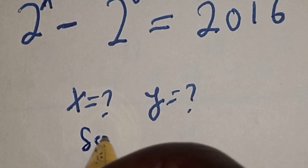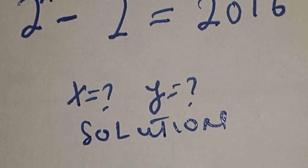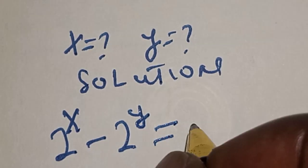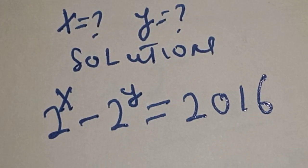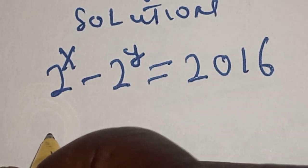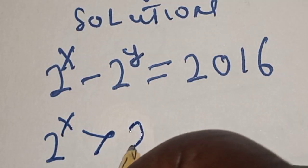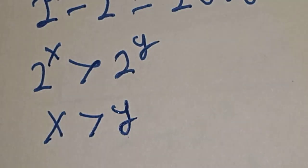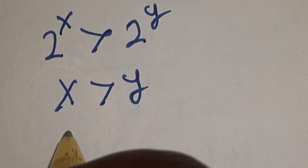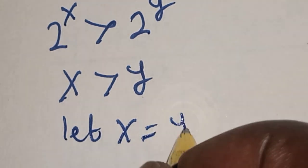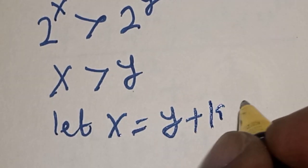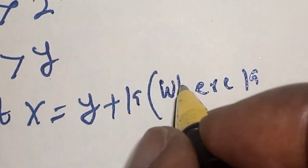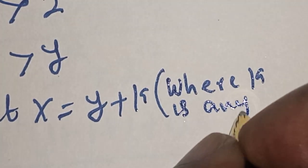Solution. The given equation is 2 raised to power X minus 2 raised to power Y is equal to 2016. Since 2 raised to power X is greater than 2 raised to power Y, therefore X is greater than Y, because X and Y are positive integers. Now let X equal Y plus K, where K is any positive integer.